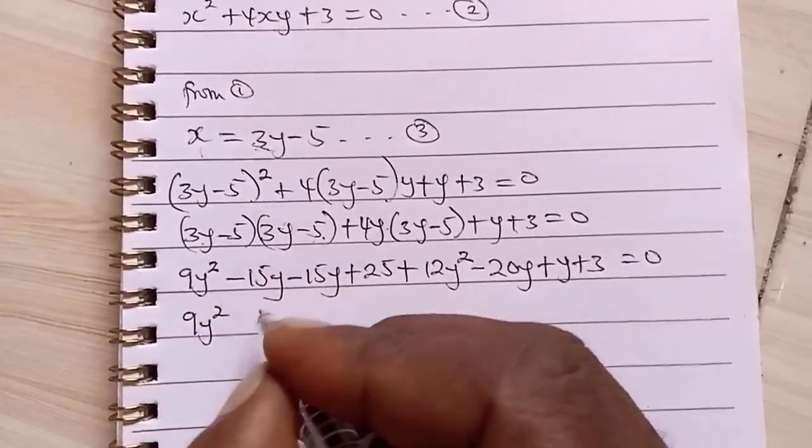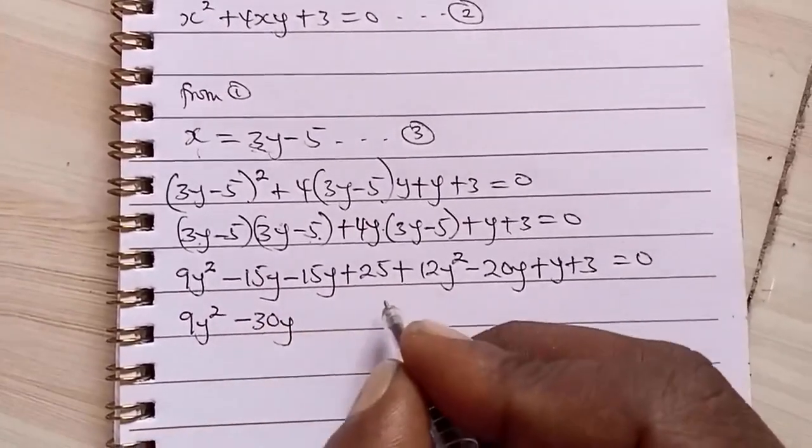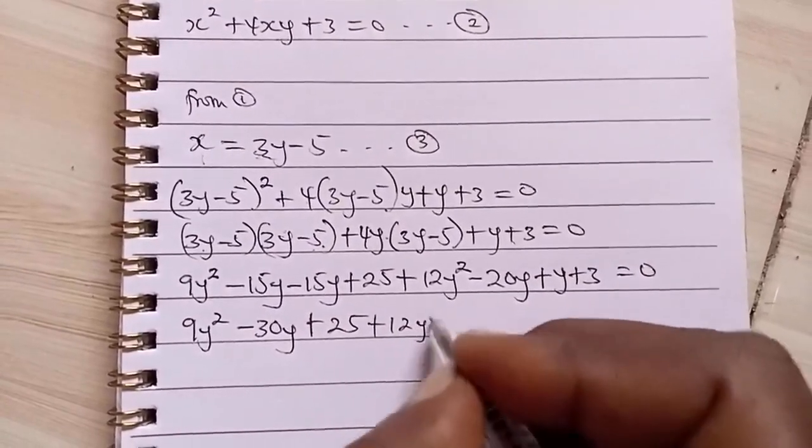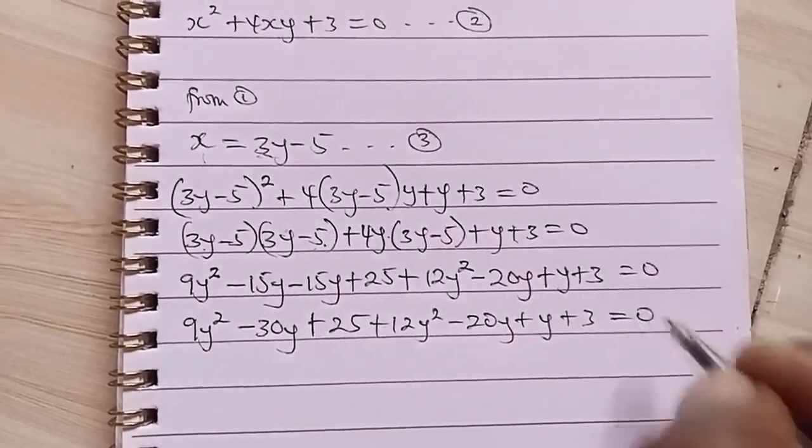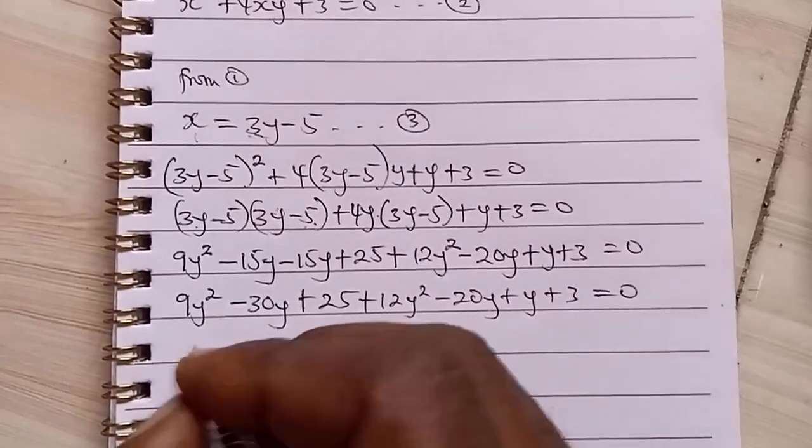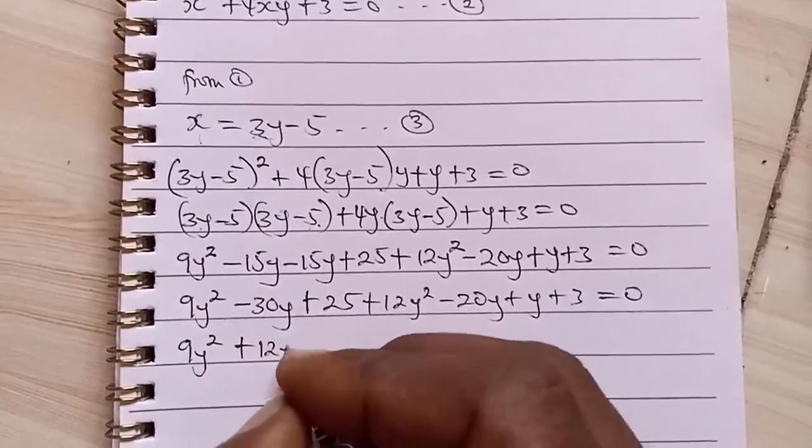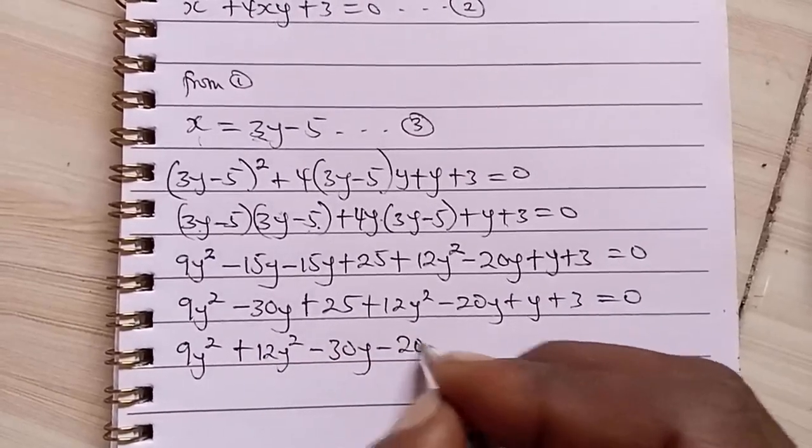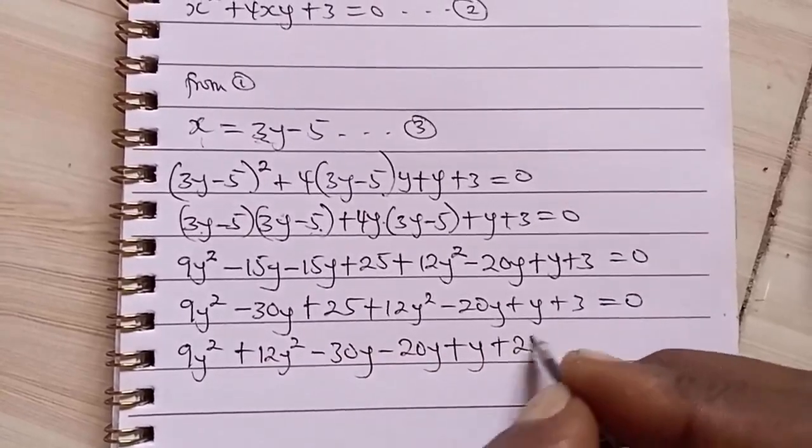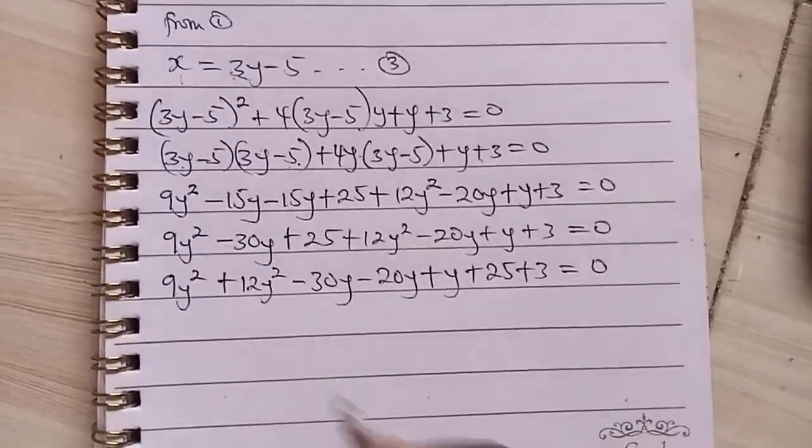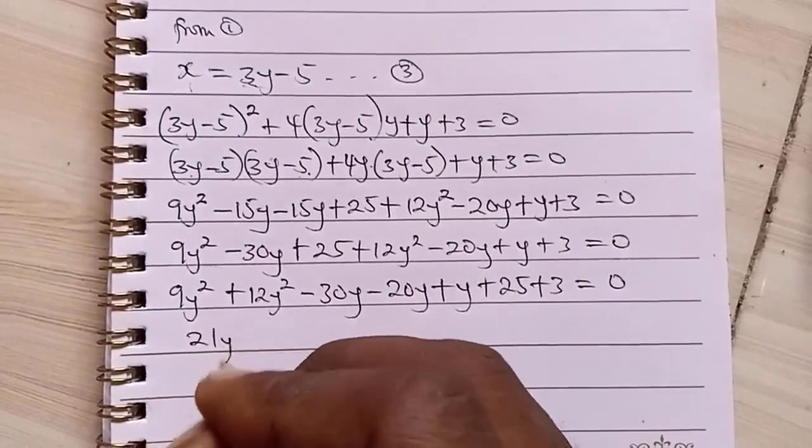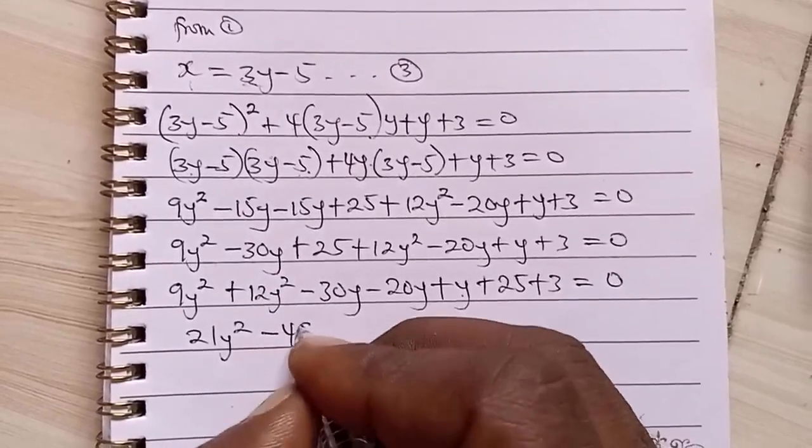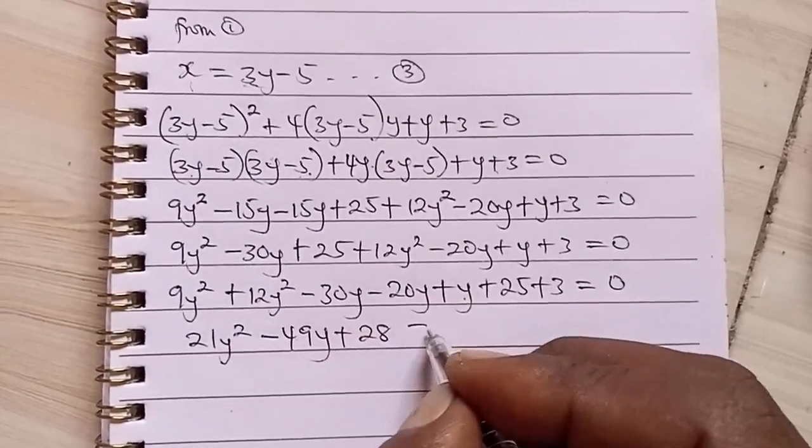So here we have 9Y squared minus 15 minus 15 is minus 30Y, then we write down the other ones: 25 plus 12Y squared minus 20Y plus Y plus 3 equals 0. Now we can collect like terms. If we collect like terms, 9Y squared plus 12Y squared, Y minus 30Y minus 20Y plus Y, numbers plus 25 plus 3 equals 0. Now, having gotten here, we have this plus this will give us 21Y squared. This will give us minus 50 plus this will give us minus 49, so minus 49Y, this is 28 plus 28 equals 0.